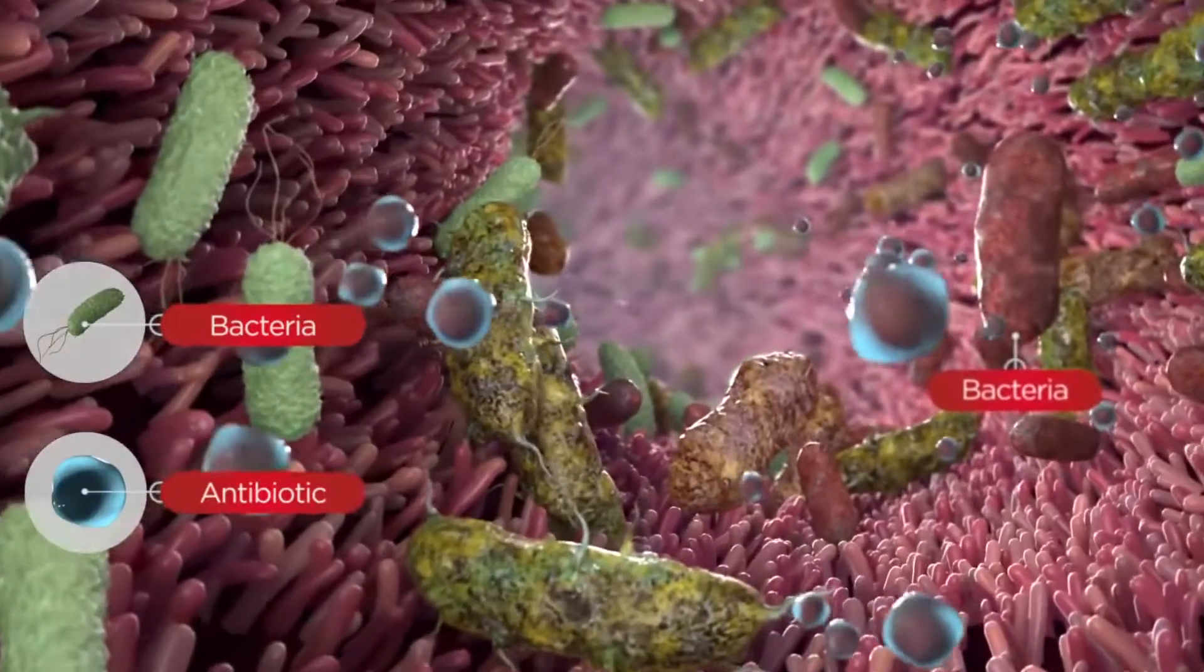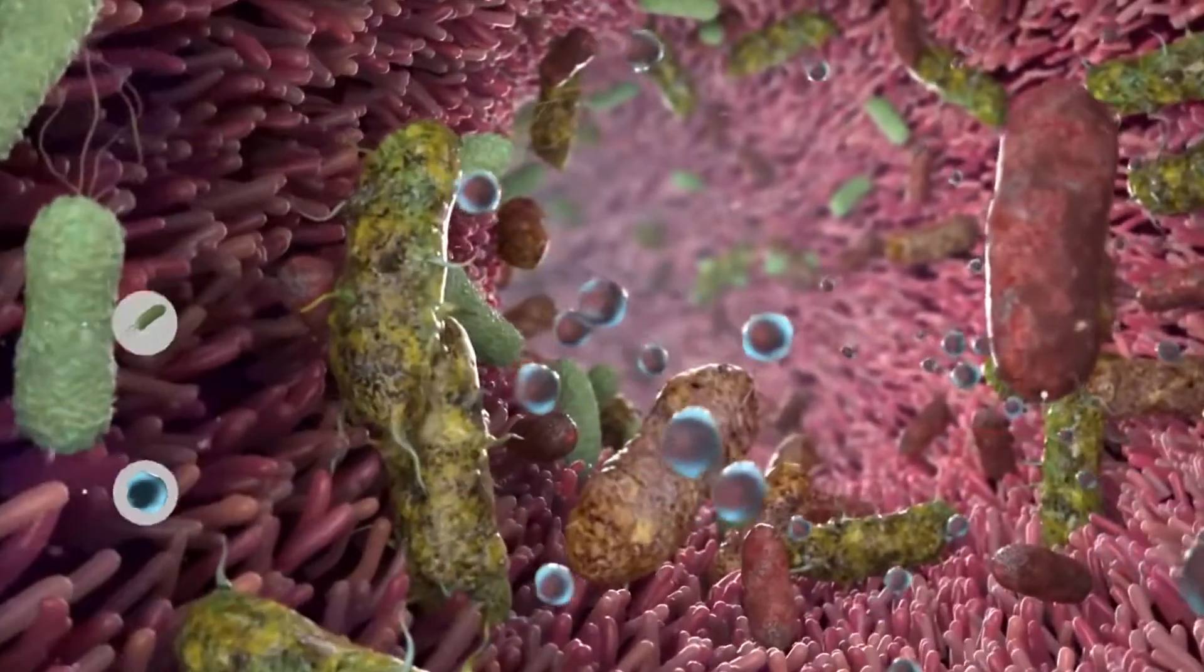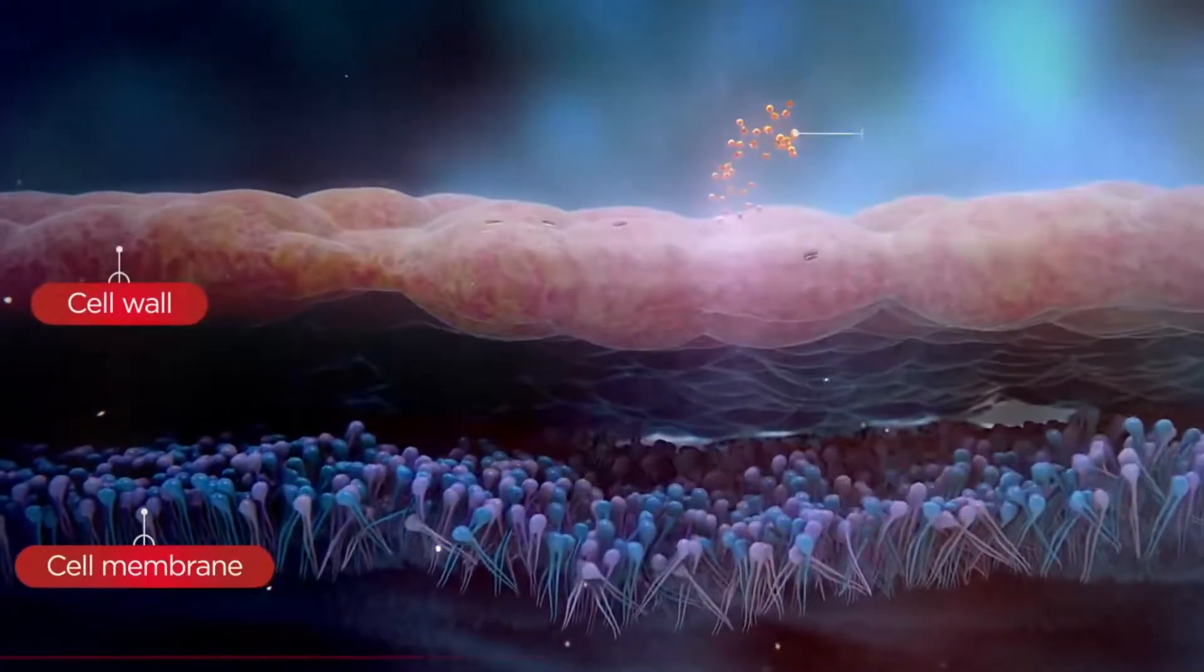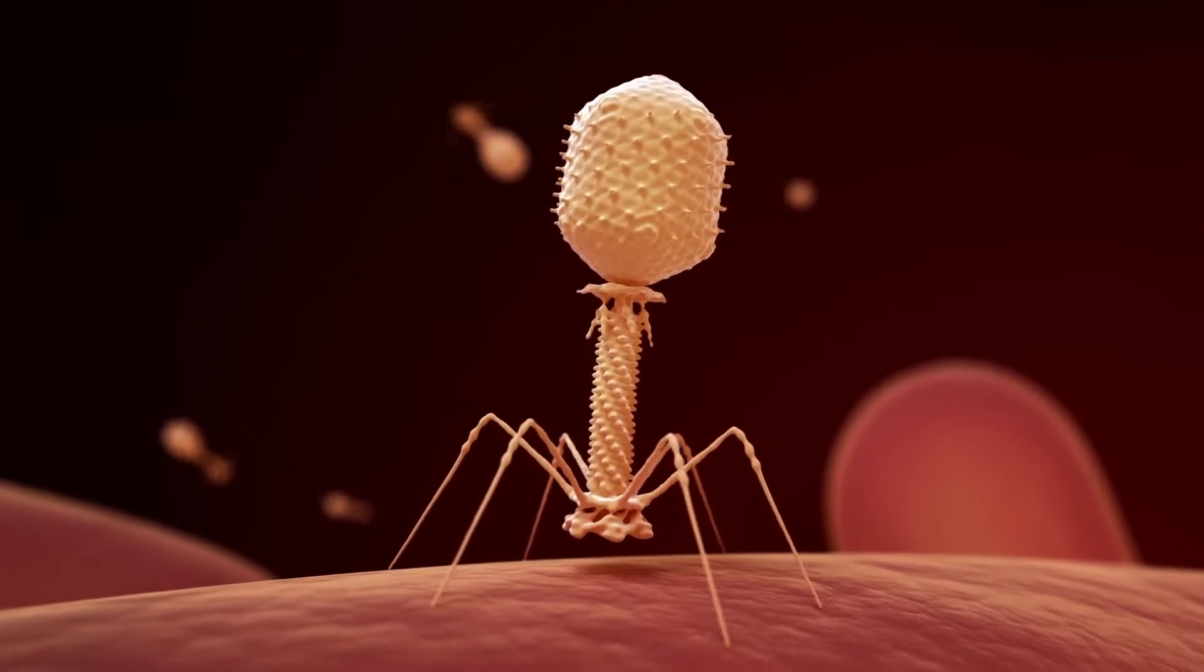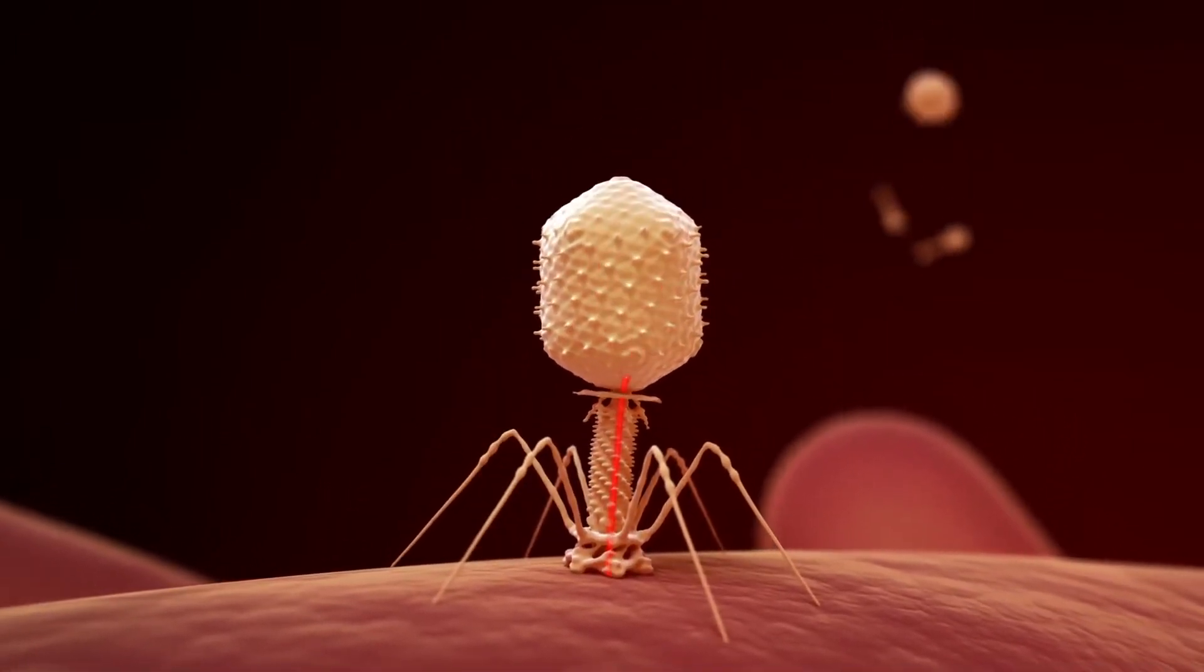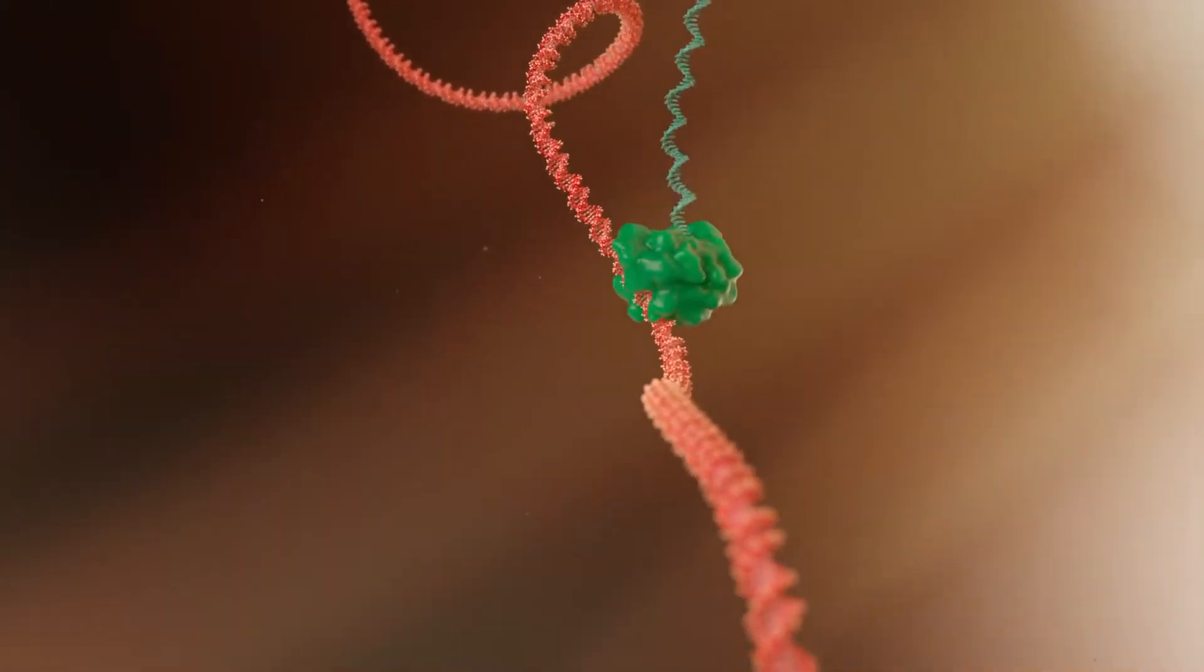Think of it like this. Antibiotics are like carpet bombing, killing everything, even the good bacteria in our intestines that we don't want to harm. Phages, on the other hand, are like guided missiles that only attack where they are supposed to. Perhaps we should have been using phages from the beginning.